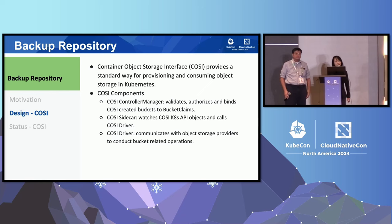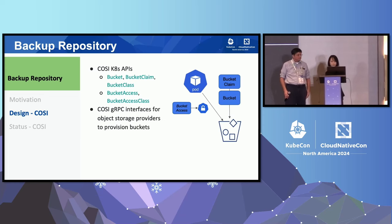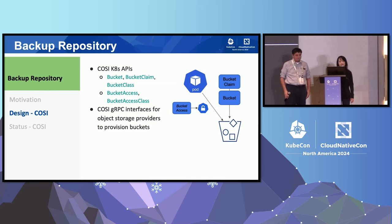There are multiple COSI components. There is a controller manager that binds the COSI-created buckets to the bucket claims. There is a COSI sidecar that watches COSI Kubernetes API objects and communicates with the COSI driver. There is the COSI driver that communicates with the object storage backends to provision the buckets. There are two sets of Kubernetes APIs. The relationship between bucket, bucket claim, and bucket class are very similar to that for PV, PVC, and storage class. We also have APIs that allow a bucket to be accessed by a pod.